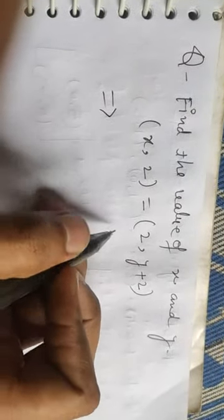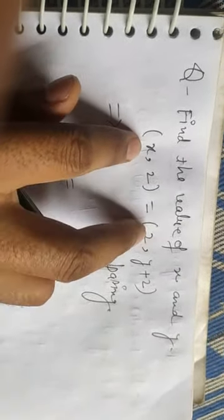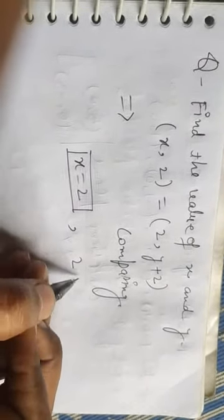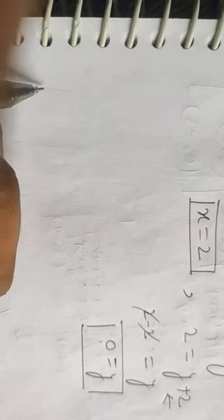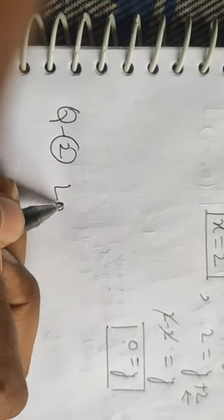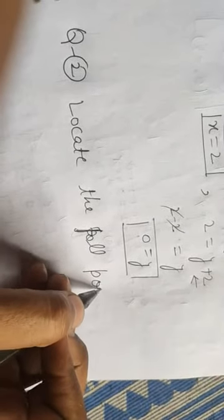The question is: (x, 2) = (2, y + 2). Since the two ordered pairs are equal, we compare both sides. Comparing the first components: x = 2. Comparing the second components: 2 = y + 2, so y = 0. Therefore x = 2 and y = 0 are the required values.